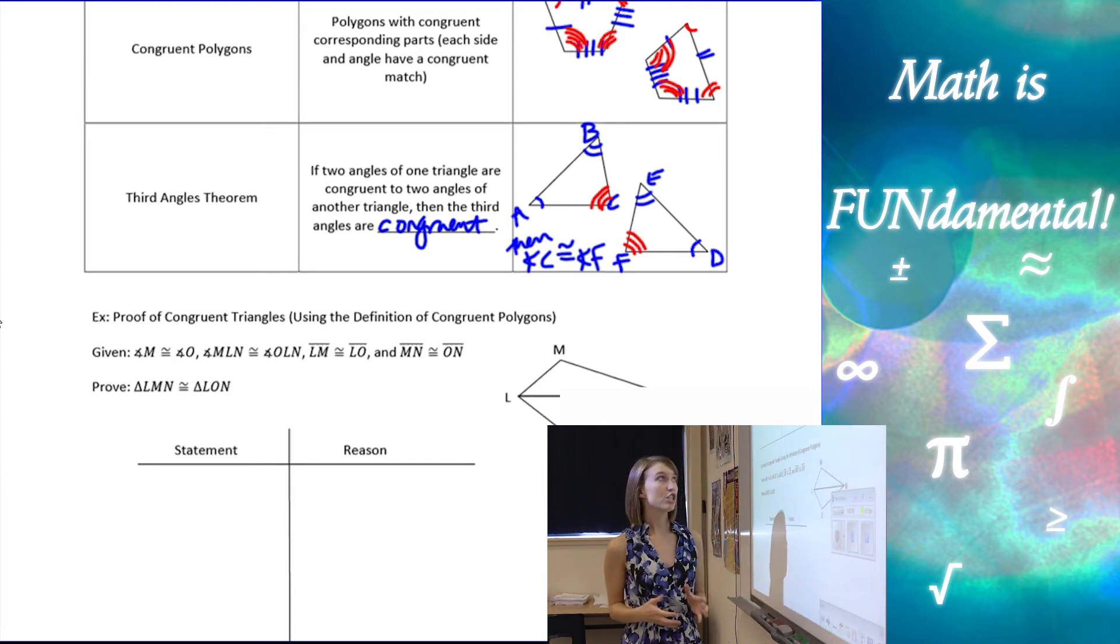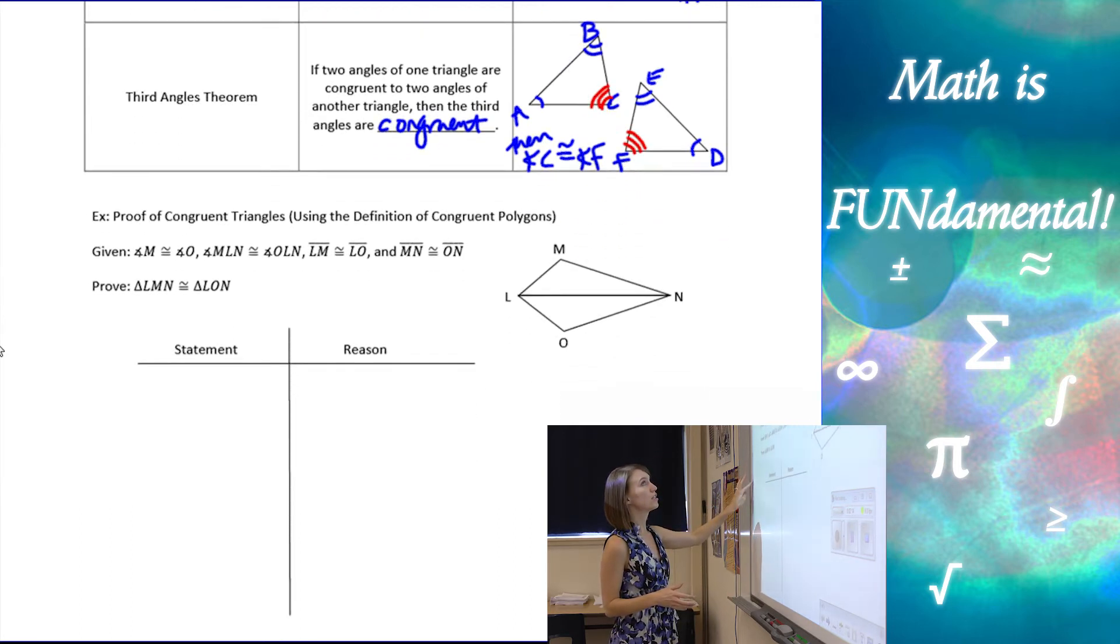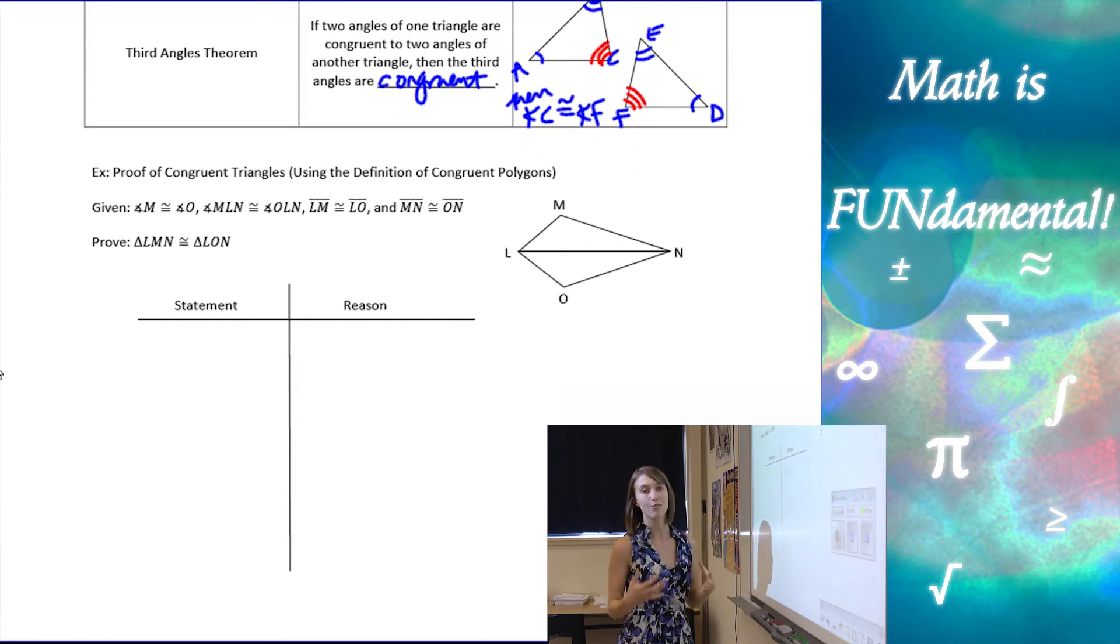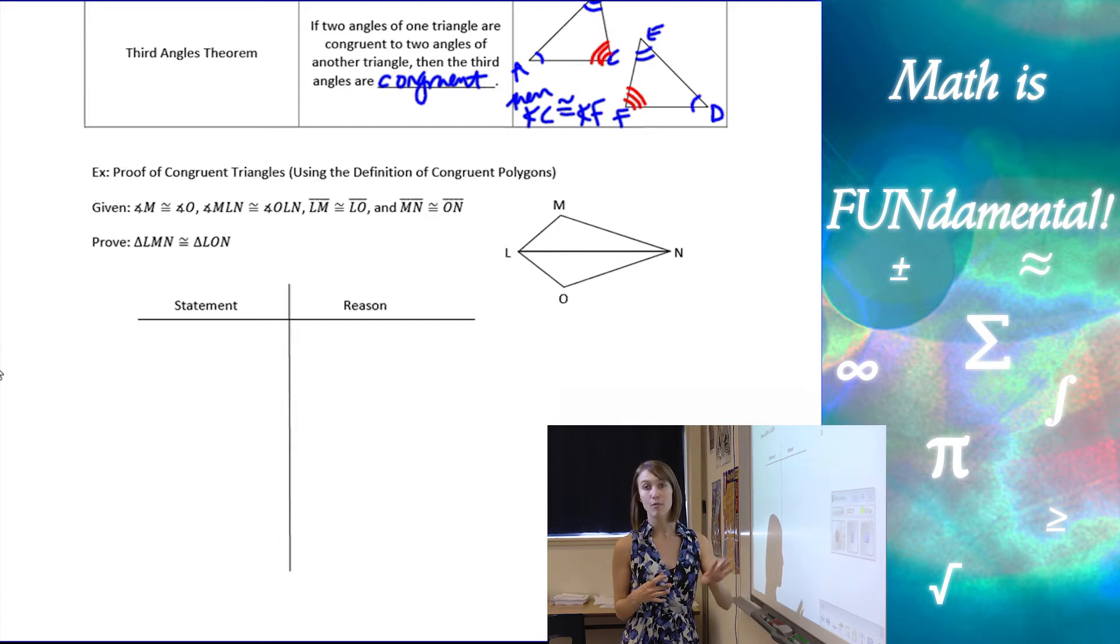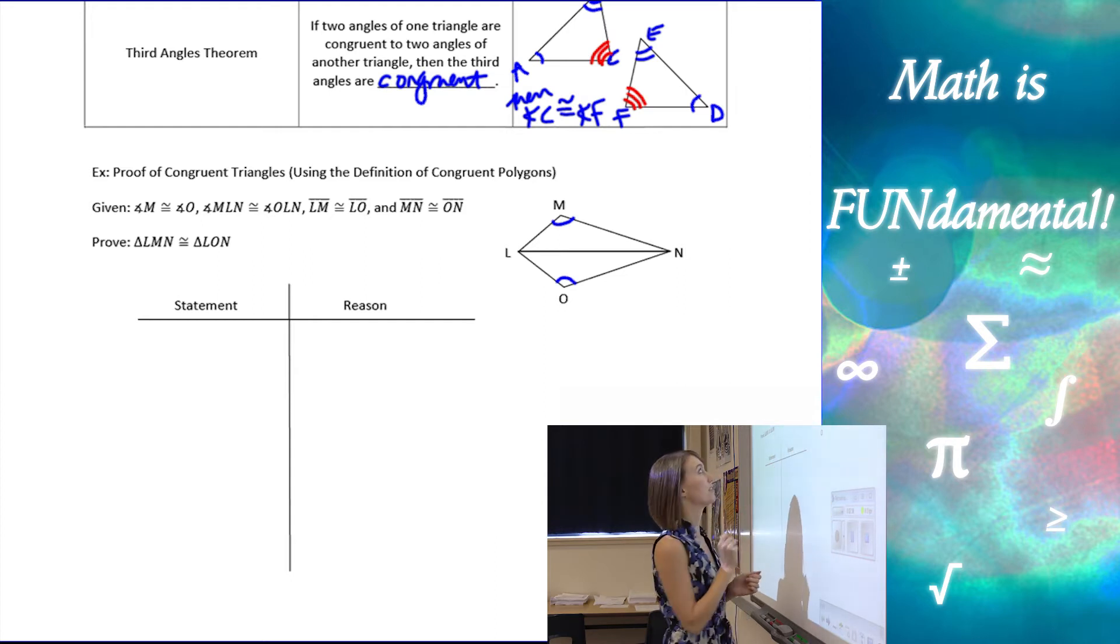Let's use what we know about triangles and what we just learned about congruent figures and do a proof. Here we have some given information and a diagram. We always want to take whatever our given information is and put it on the diagram. I know that I'm given that angle M is congruent to angle O, so I'm going to mark that on my diagram.